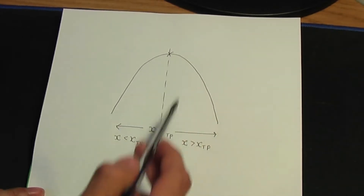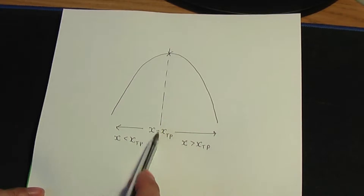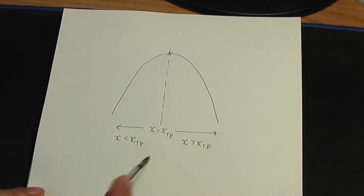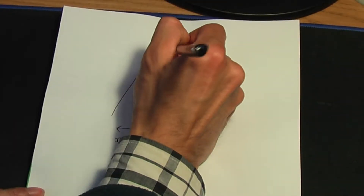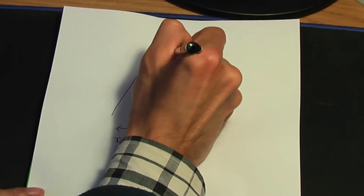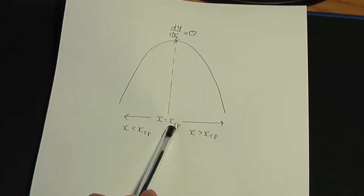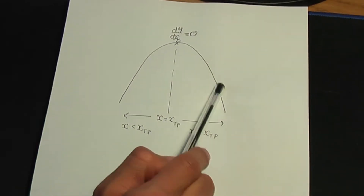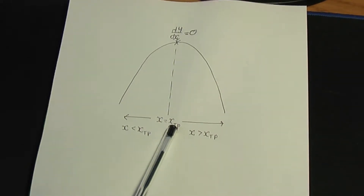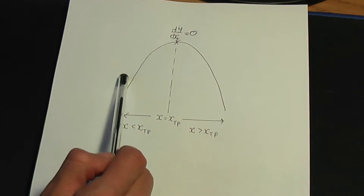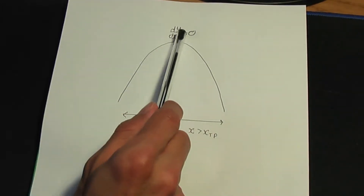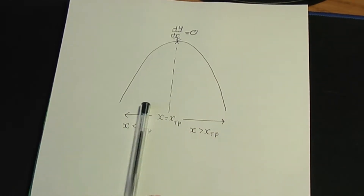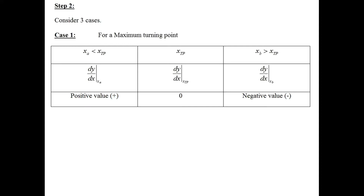The maximum point has an x-coordinate of xtp. At any turning point, dy/dx is equal to zero. However, if you choose an x-value greater than the turning point, dy/dx should be negative. And if you choose an x-value less than the turning point, dy/dx should be positive. So we go from positive to zero to negative — that illustrates a maximum turning point.